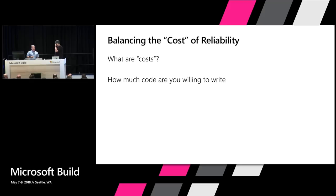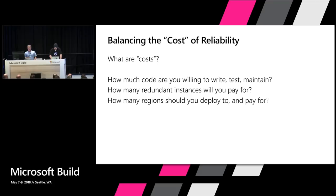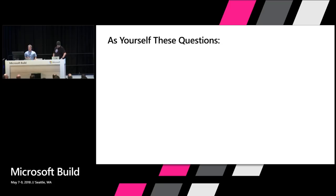We'll spend some time talking about patterns for coding with unreliable services, but you have to figure out where and how to use them, because there are costs. How much code are you willing to write, test, and maintain? How many redundant systems are you going to pay for? How many regions? Regional support costs money. My ten-region deployment this morning was kind of fun.